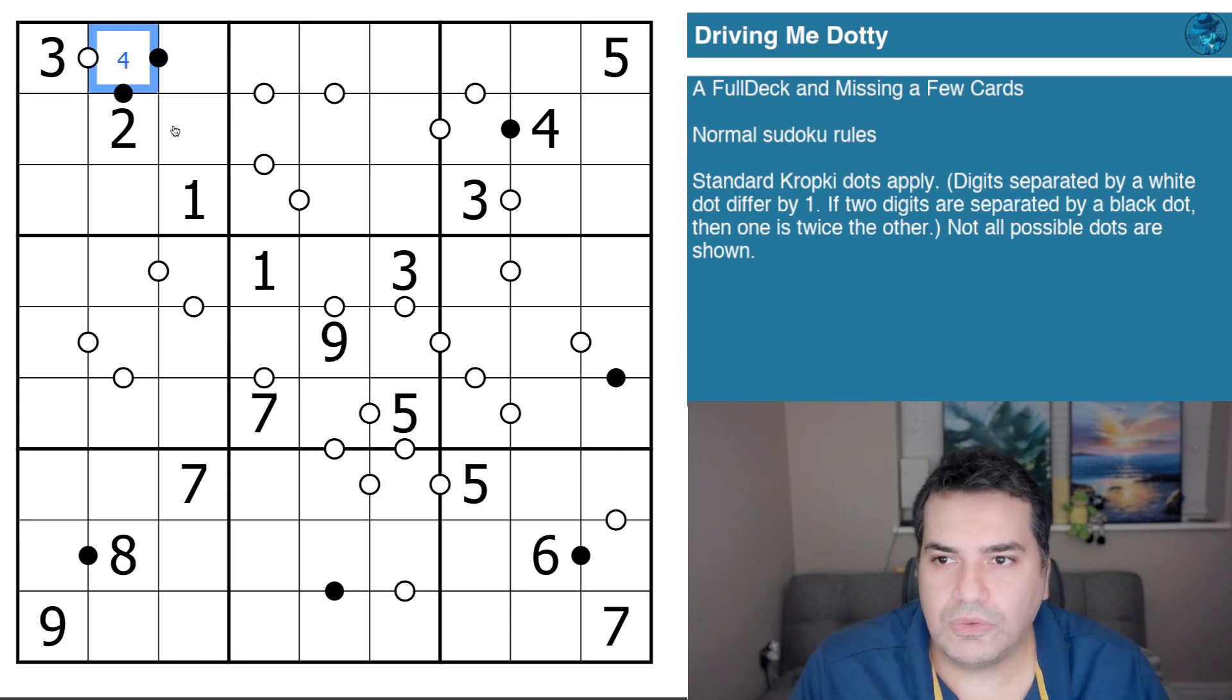You can already tell which one it is. This two can only be either in a one to two ratio because this is a black dot, so this is either going to be one or four, because it has to be either one times two to get to two, or two times two to get to four. I think we can see from my very obvious example which one it will be.